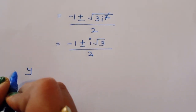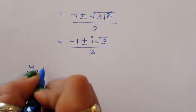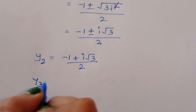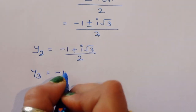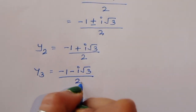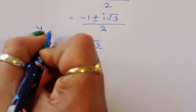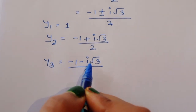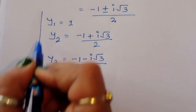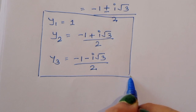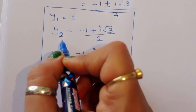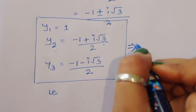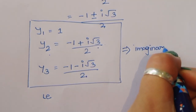So we have three solutions: y1 (already found), y2 = (−1 + i√3) / 2, and y3 = (−1 − i√3) / 2. Therefore y1 = 1, y2 = (−1 + i√3) / 2, and y3 = (−1 − i√3) / 2. Note that y2 and y3 are imaginary solutions.